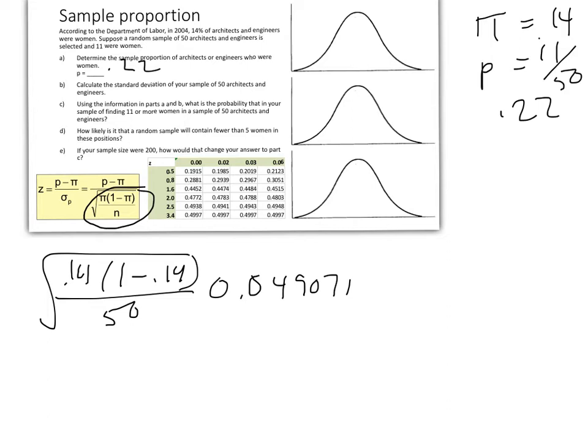Now looking at the information from parts A and B, I'm on part C. What is the probability that in your sample of finding 11 or more women in a sample of 50 architects and engineers? What's the probability of that result? We want to find the likelihood of that.